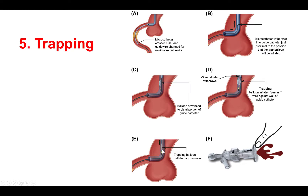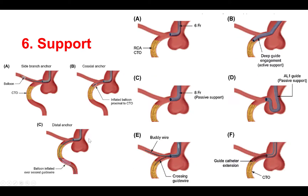Once removal of the microcatheter is completed, the trapping balloon is deflated and removed. Then, very importantly, the Y-connector is back-bled to clear the guide of any air, which is commonly aspirated when the trapping technique is used.